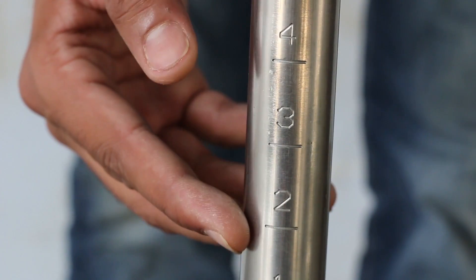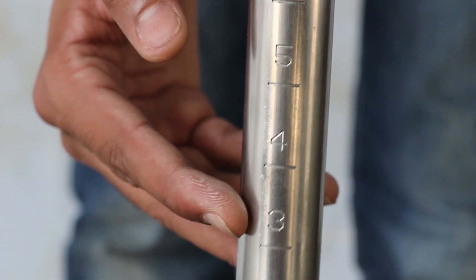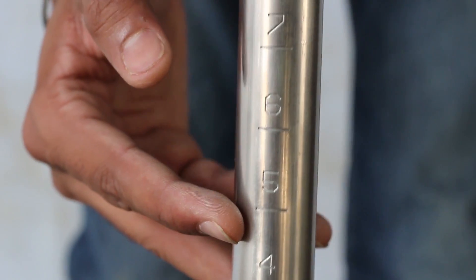Here the markings on the rod are shown. These points can be used as reference points while doing the experiment.